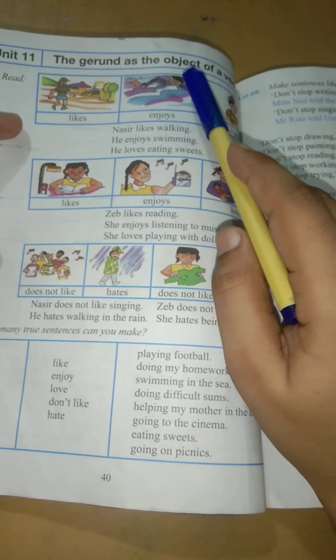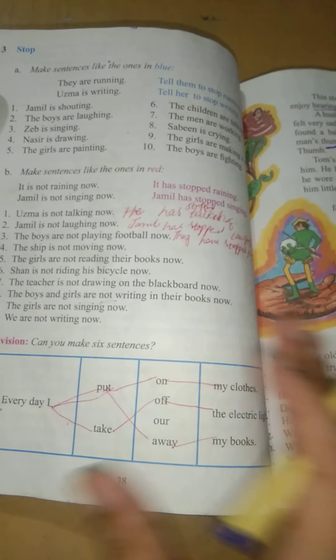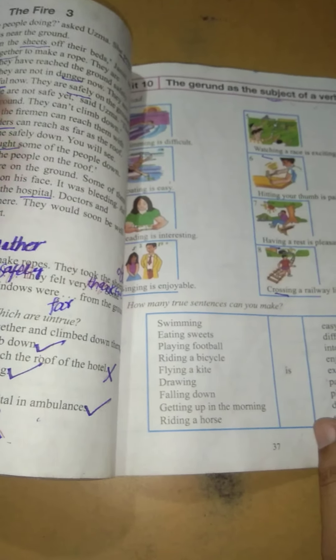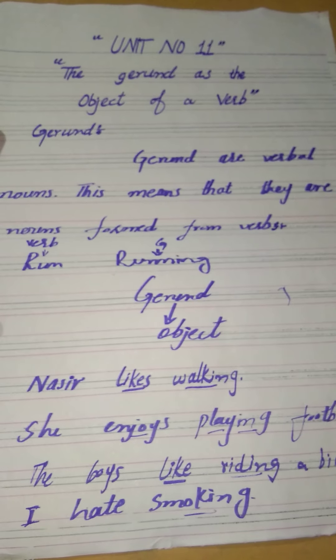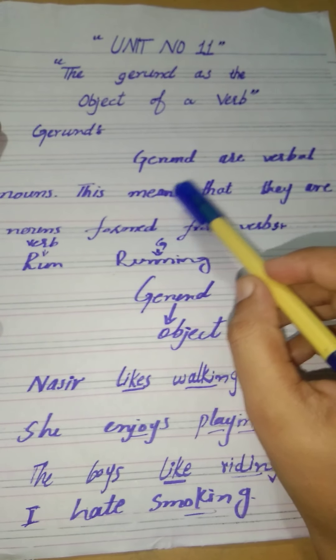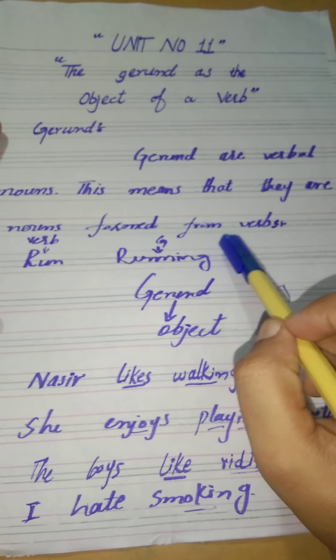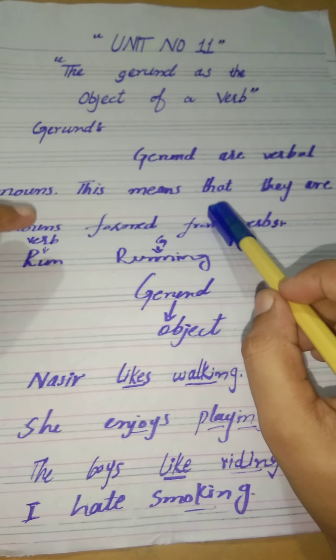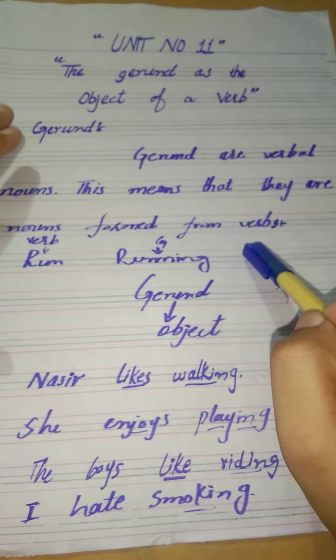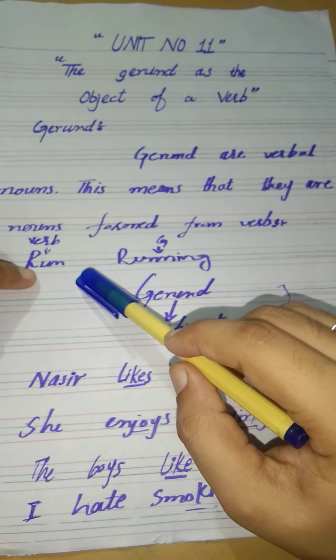Today's topic is the gerund as the object of a verb. In the last unit I told you about gerunds. I want to remind you again — gerunds are verbal nouns. This means they are nouns formed from verbs. These are nouns, and they are formed from verbs.